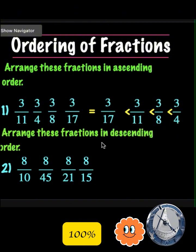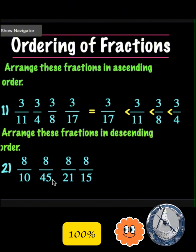Arrange this fraction in descending order. To arrange in descending order, we start with the biggest fraction. In this case, 8 over 10 becomes the biggest fraction, followed by 8 over 15, then 8 over 21, and 8 over 45 becomes the smallest fraction.